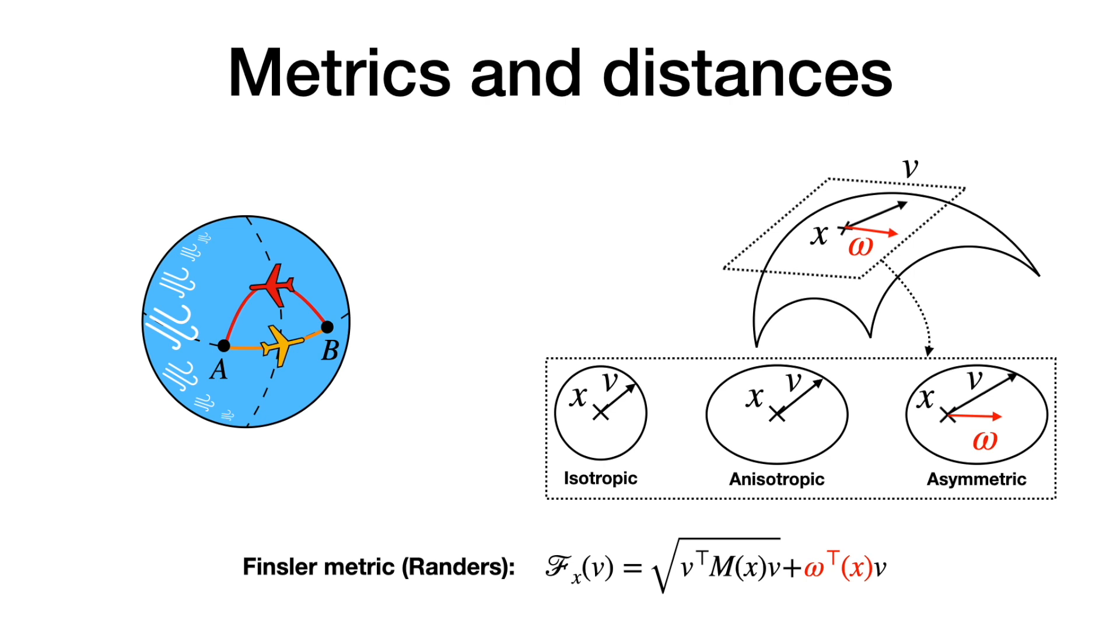The consequence is that traversing a curve in one direction or the other no longer leads to the same length, implying that shortest paths from A to B and from B to A may not be the same.